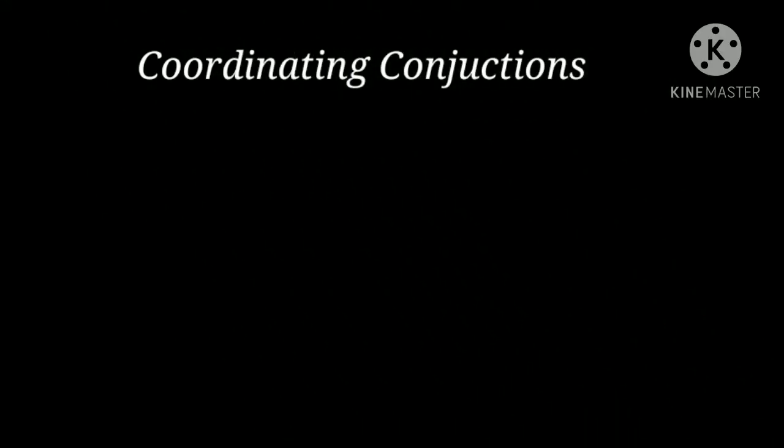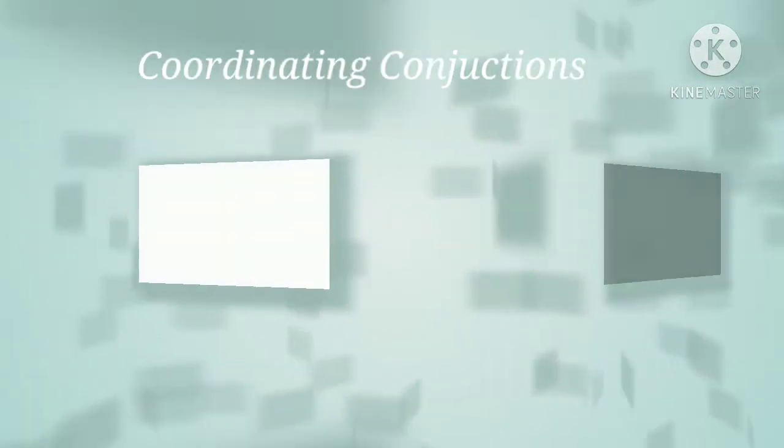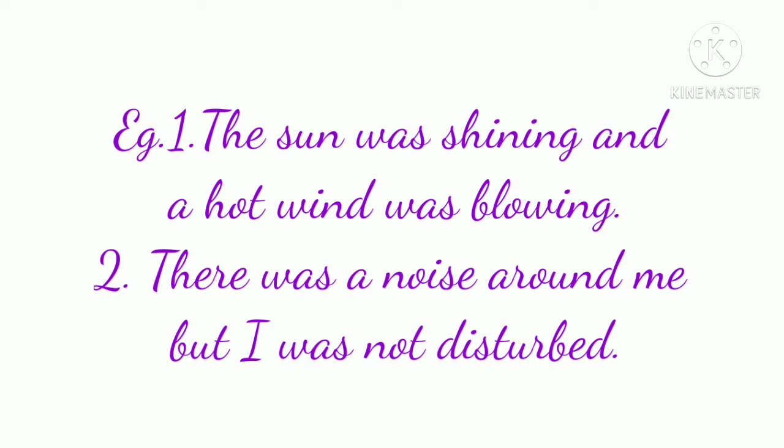To begin with the first kind, that is coordinating conjunctions — a conjunction used to join two independent statements or two statements of equal rank or importance is called a coordinating conjunction. Coordinating itself means of equal rank. Example: the sun was shining and a hot wind was blowing. As we can see, there are two independent sentences used in this. The sun was shining, and the second sentence is a hot wind was blowing, and both sentences are added by the conjunction 'and'.